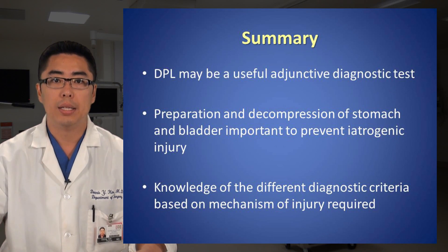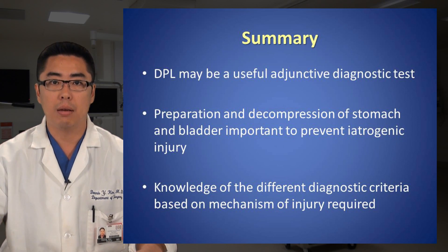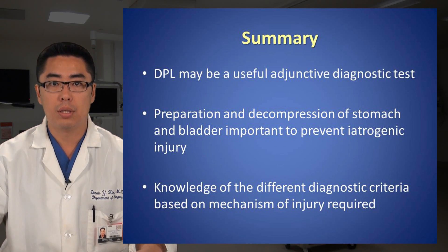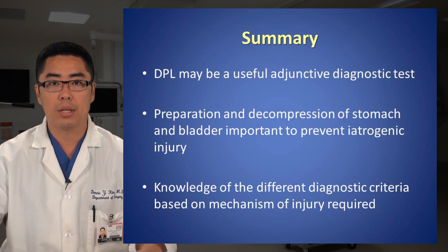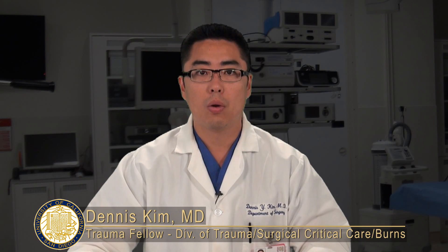Summary: DPL may be a useful adjunctive diagnostic test in patients sustaining both blunt and penetrating injury to the torso. Preparation and decompression of the stomach and bladder are important steps to prevent iatrogenic injury to these organs. Knowledge of the different diagnostic criteria based on mechanism of injury are required in order to successfully perform and interpret the results of a DPL. Once again, thank you for joining us. My name is Dr. Dennis Kim with the UC San Diego Division of Trauma, Surgical Critical Care and Burns.